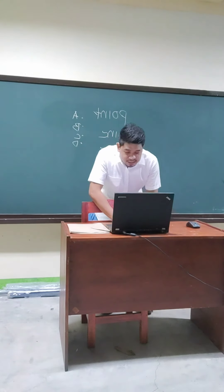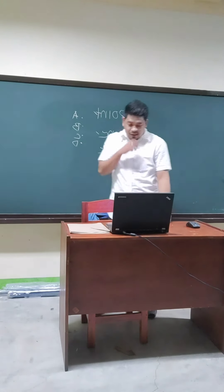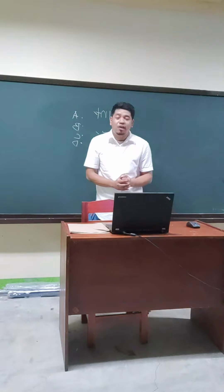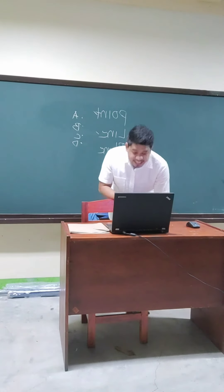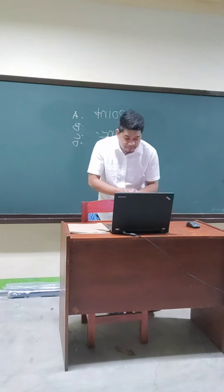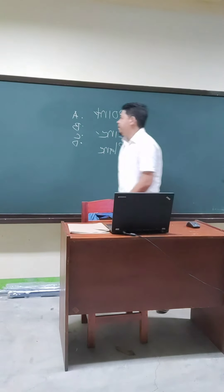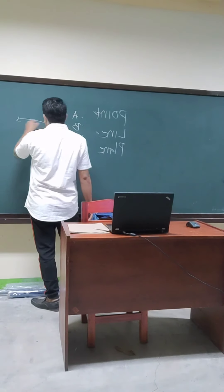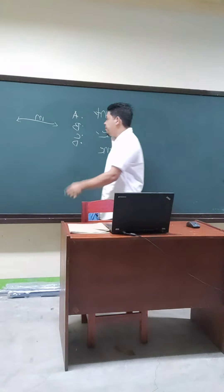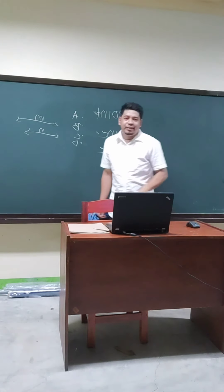So next is Line. What is Line? Lines are represented by a small italicized letter, but they can also be identified by two points that are on the line. For example, Line M. Another example, Line N.